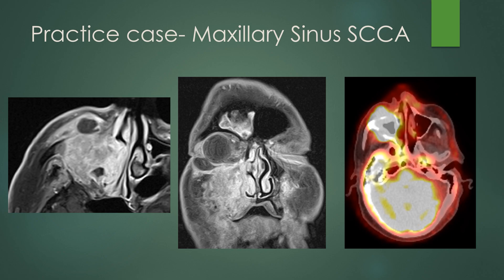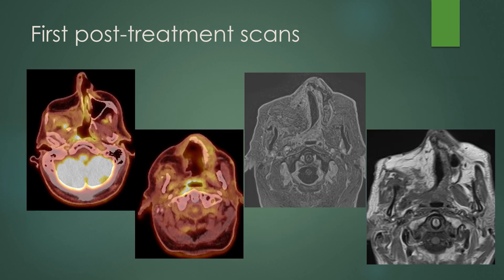For a practice case: a maxillary sinus squamous cell carcinoma — a large invasive mass involving the maxillary sinus, extending into the nasal cavity, invading into the pterygopalatine fossa, pre-maxillary soft tissues, and floor of the orbit. Massive uptake on FDG PET. On the first post-treatment scan, the flap is in place with architectural distortion from the maxillectomy. Posterior to the flap, there's an area of FDG uptake, but nothing mass-like.